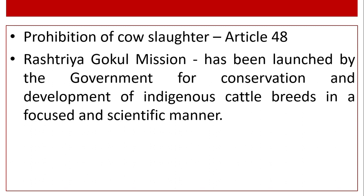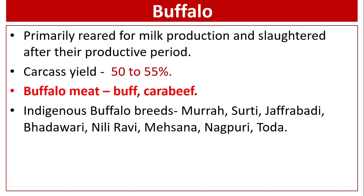Rashtriya Gokul Mission has been launched by the government for conservation and development of indigenous cattle breeds in a focused and scientific manner. Next, buffalo: primarily reared for milk production and slaughtered after their productive period. Carcass yield of buffalo is 50 to 55 percent. Buffalo meat is known as buff or cara beef.